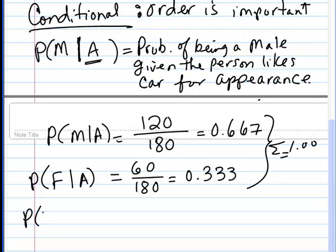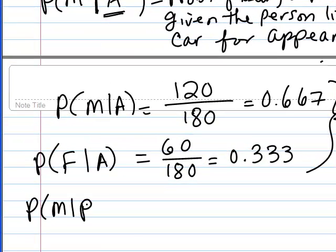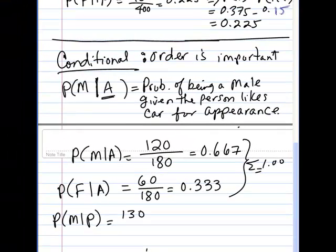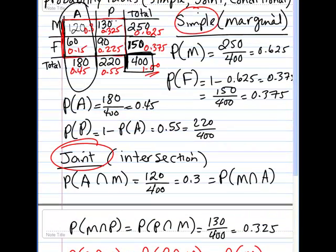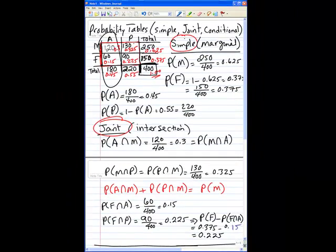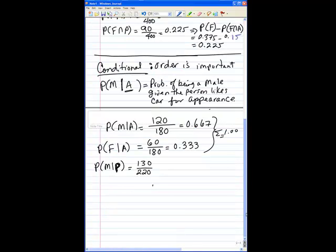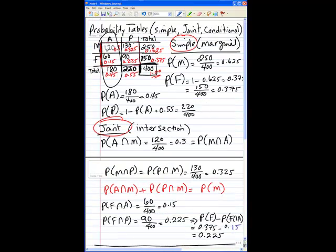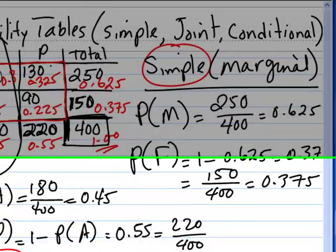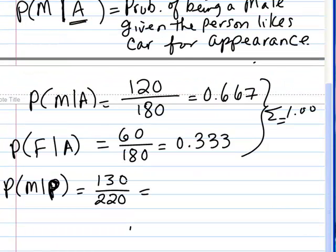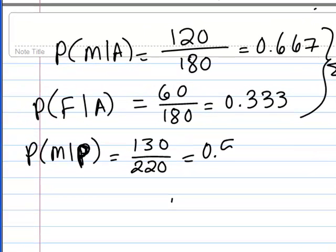By the same token, we can compute probability of male given that you buy a car because of its performance. And that is 130 out of 220, because now we're zooming in on those people who buy a car because of its performance — and those people are 220. Out of those 220, 130 of them are male. So 130 divided by 220 is 0.591.